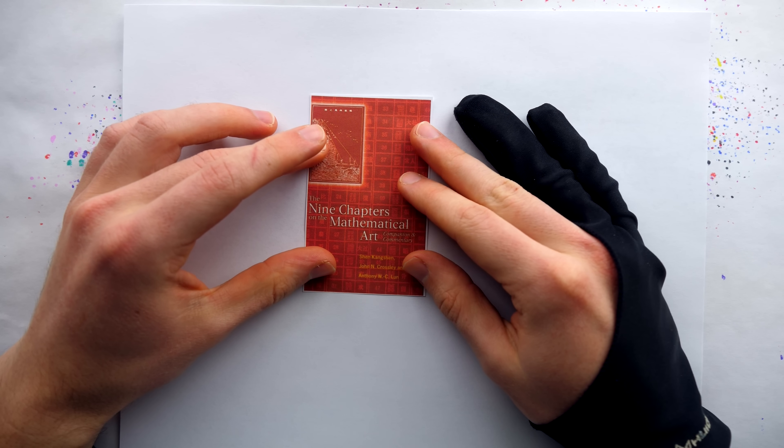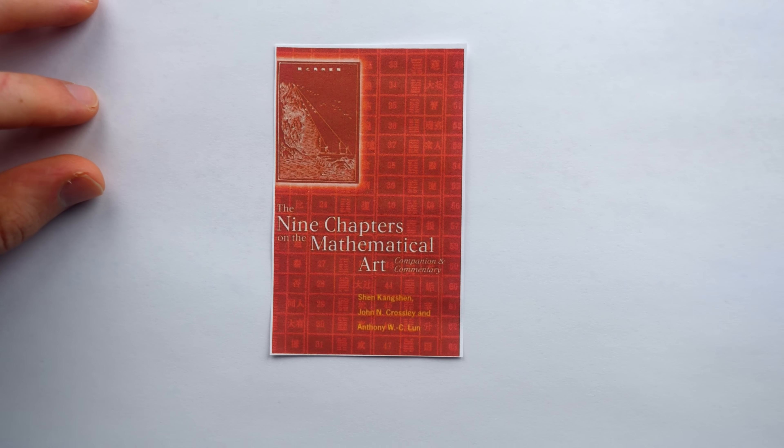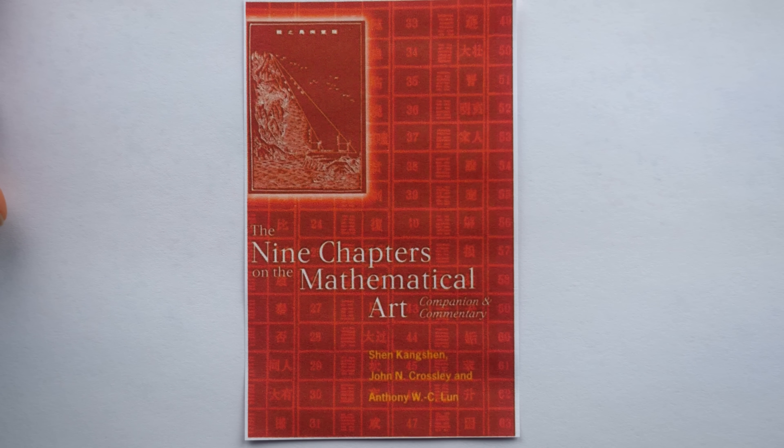When it comes to Chinese math history, probably the most significant surviving work is the Nine Chapters on the Mathematical Art.